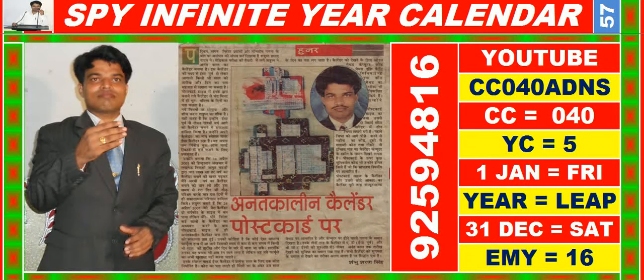Good morning, dear friends. You are heartily welcome in Master Key of Success. In this video you are watching SPY Infinite year calendar for the year having calendar code equal to 0 for 0. You may also search it on YouTube by CC 0 for 0, ADNS.